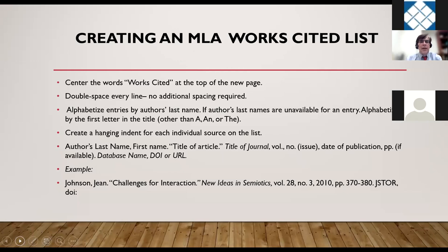For an MLA works cited list, you would center Works Cited at the top of a new page, double space every line with no additional spacing, alphabetize entries by the author's last name — or by the first significant letter of the title if no author is available, excluding words like a, an, or the. You also create a hanging indent for each source. Each entry includes the author's last name, comma, first name, period; the title of the article in quote marks; the title of the journal in italics; volume and issue number; date of publication if available; followed by the digital object identifier or URL.